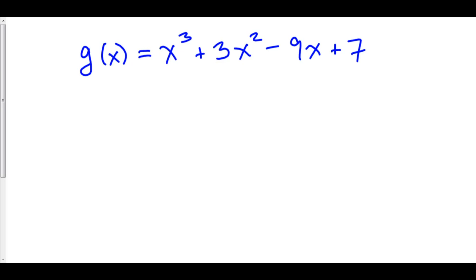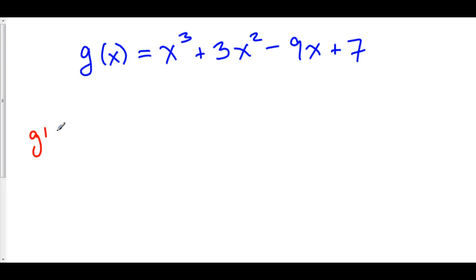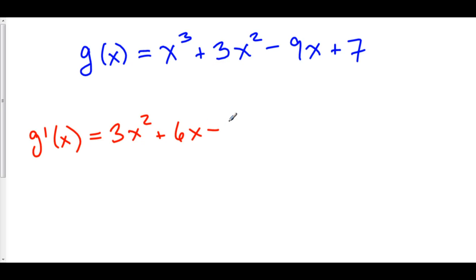Let's do a full-scale analysis, including our first derivative analysis and second derivative analysis of g of x. For our first derivative analysis, we first have to find the critical points. To find the critical points, we're going to set g prime equal to zero, or see where g prime does not exist. So g prime is 3x squared plus 6x minus 9.